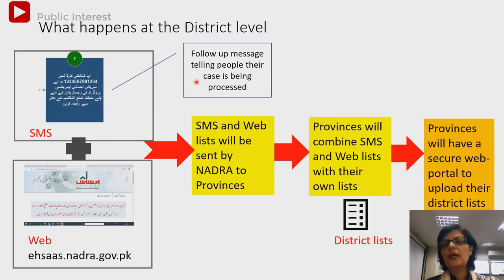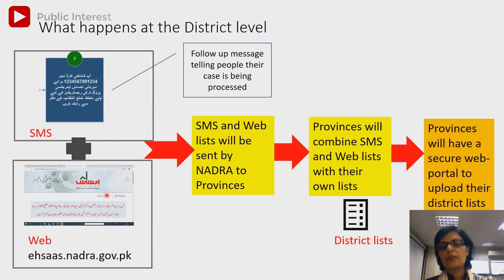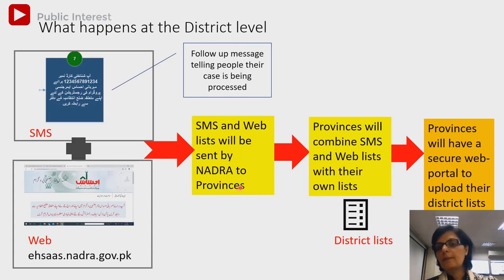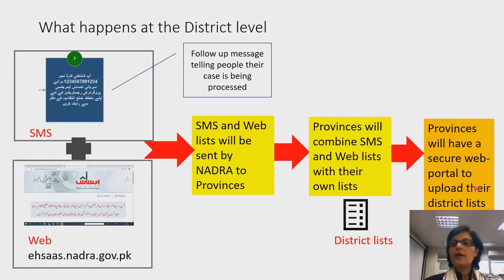You will receive a follow-up message that your application has been processed. You do not have to leave to visit the district administration, because we realized that people have a lot of problems going to district administration. So we have a portal for them — asas.nadra.gov.pk — so that they can register themselves. We will send a list to provinces, and provinces will combine them with their own lists, providing a secure portal for district-wide uploads using unique login credentials.